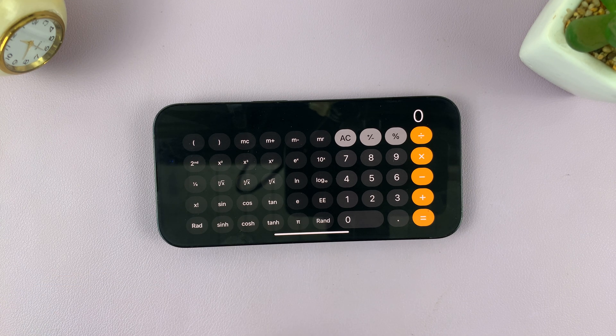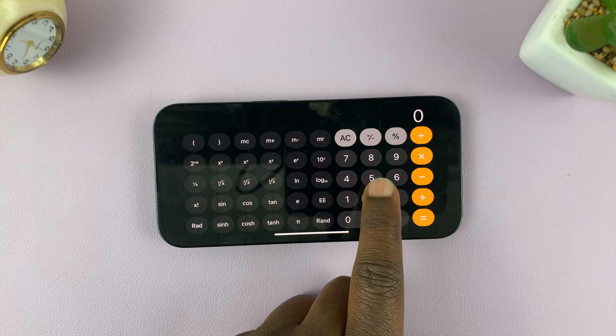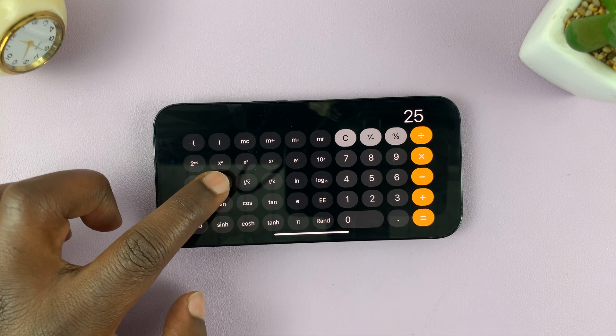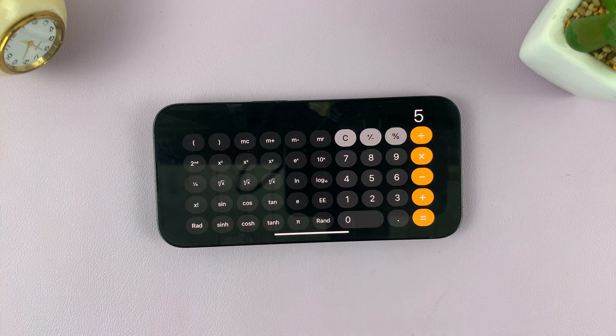So if you want to calculate the square root of 25, for instance, just type 25 and then tap on the square root icon. And that's going to give you your answer.